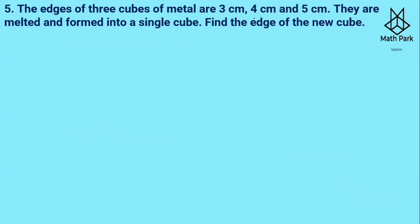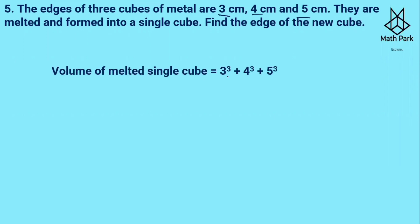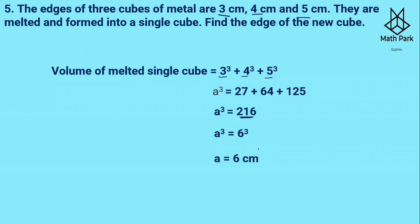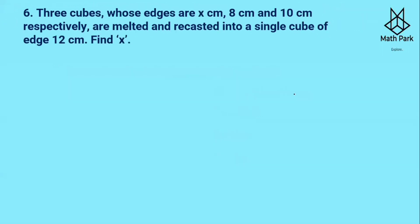The edges of three cubes of metal are 3 cm, 4 cm, and 5 cm. They are melted to form a single cube. The volume of the new single cube equals the sum of volumes of all three: 3³ + 4³ + 5³ = 27 + 64 + 125 = 216. Since 216 = 6³, the edge of the new cube is 6 cm.